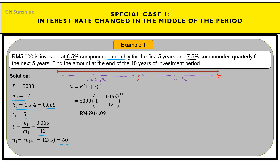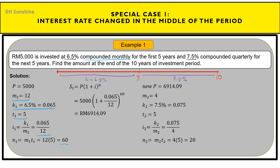That amount is based on the first 5 years. To calculate the amount at the end of the full 10-year period, we list new information. The new principal value is the future value just calculated — the first period's future value becomes the new principal. The frequency for the next period, based on 'compounded quarterly', gives M equal to 4.